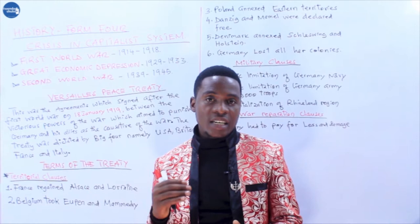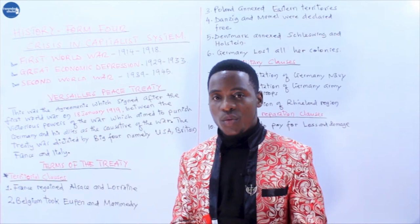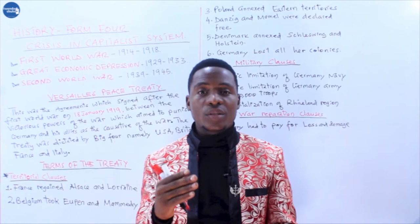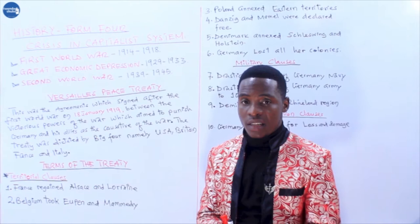They dictated the conference which was called the Versailles Peace Treaty, and they discussed about what would be the aftermath of the First World War. During this Versailles Peace Treaty, they proposed the formation of the League of Nations in order to maintain world peace and prevent the occurrence of another world war.